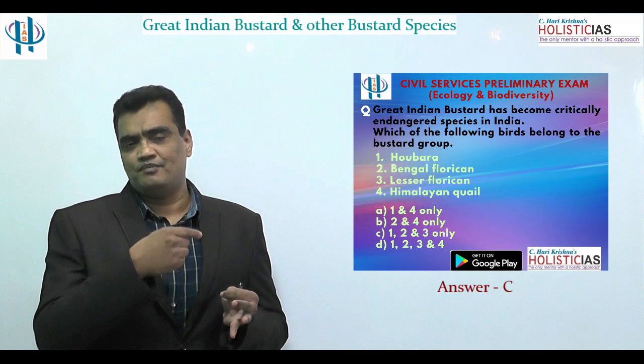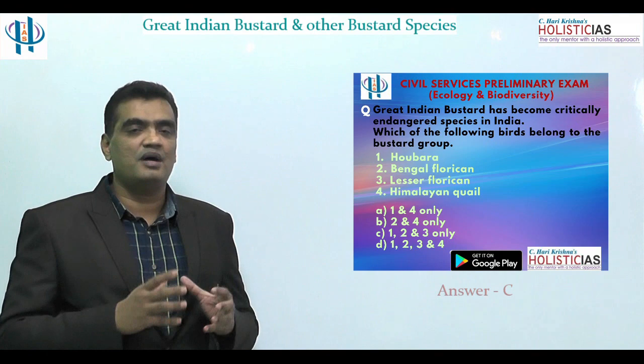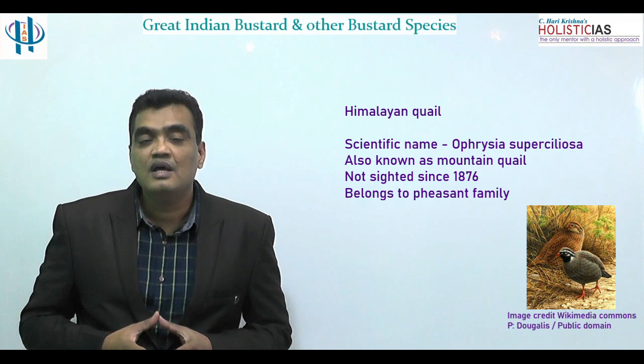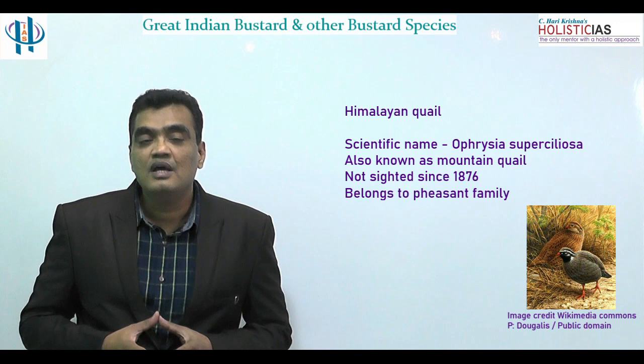So, all four birds — the Great Indian Bustard, Haubara Bustard, Bengal Florican, and Lesser Florican — belong to the bustard group. The Himalayan Quail, also known as the Mountain Quail, does not belong to the bustard group. Therefore the correct answer is option (c): one, two, and three.